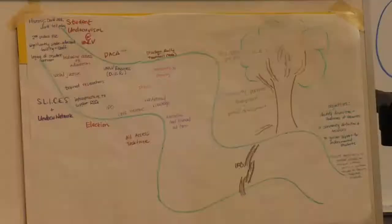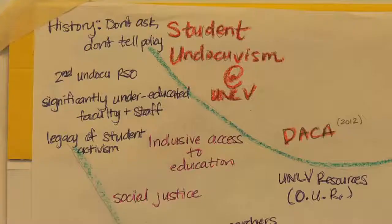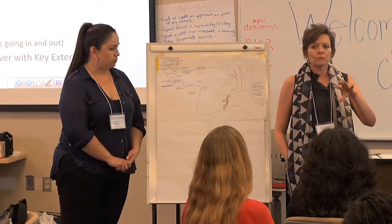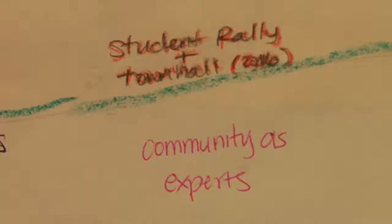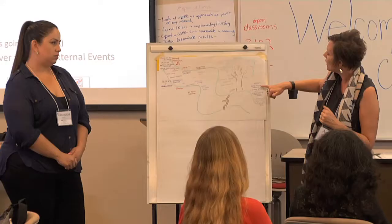Along the way, we've talked about some of our values and our resources. Some of our values are inclusive access to education and social justice. And really, our community members — the community that we're serving, which is undocumented students — they are actually the experts. Their lived experiences mean they know the resources they need and the barriers they face to accessing resources. So we've really relied on them to help us design the project.